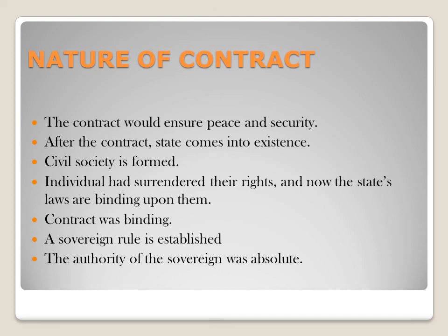After the contract, the state came into existence, and civil society now guarantees the security, peace, life, and property of the people. All the rights of the people are now secured. The contract was binding upon all the people, and after this contract a sovereign rule is established — a sovereign is appointed and people are subject to that sovereign. The sovereign was the product of the contract but was not a party to it. The authority of the sovereign was unlimited, all-embracing, final, and irrevocable — the sovereign ruler was absolute.